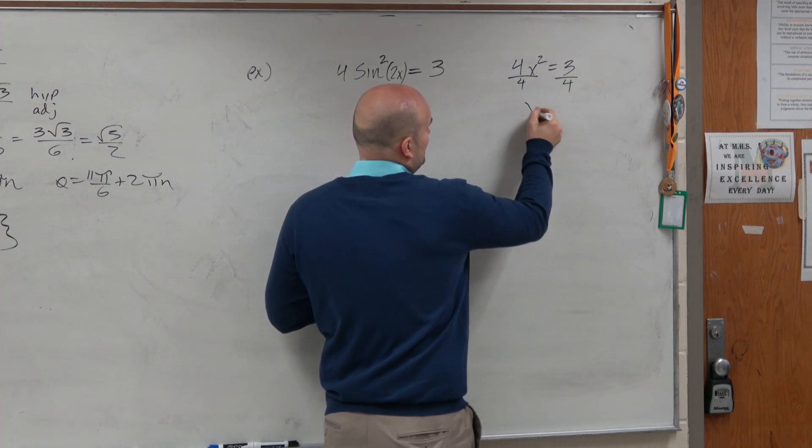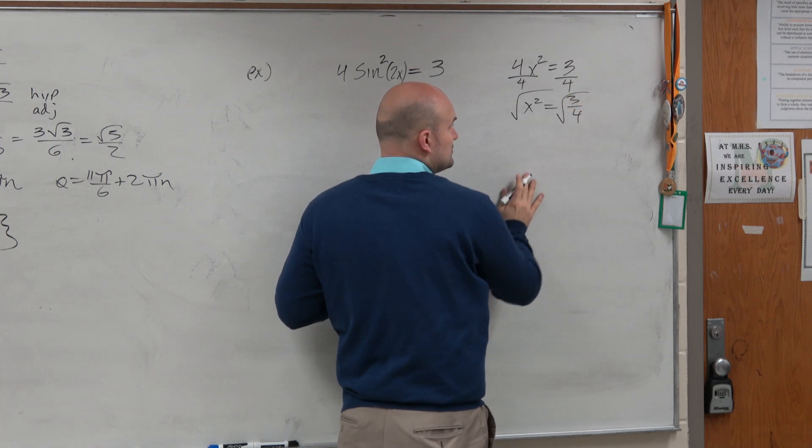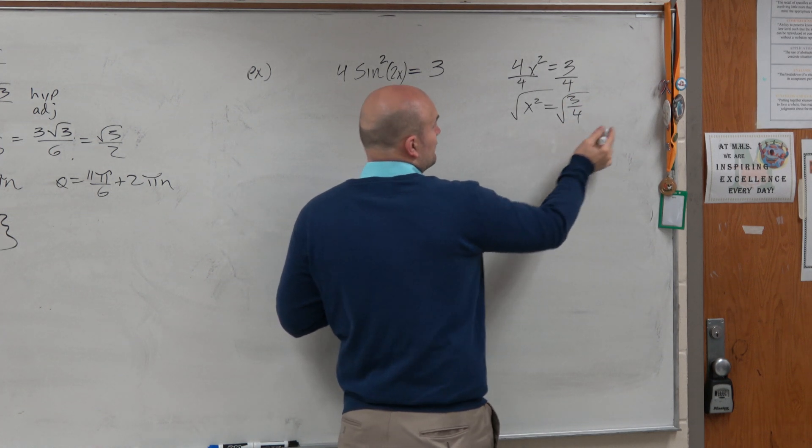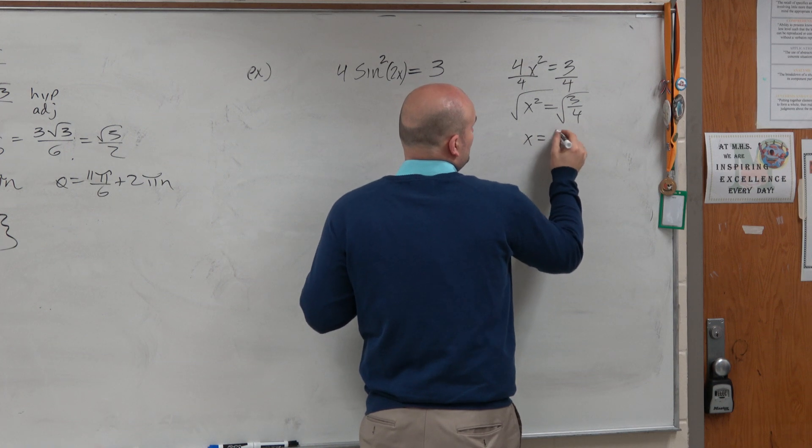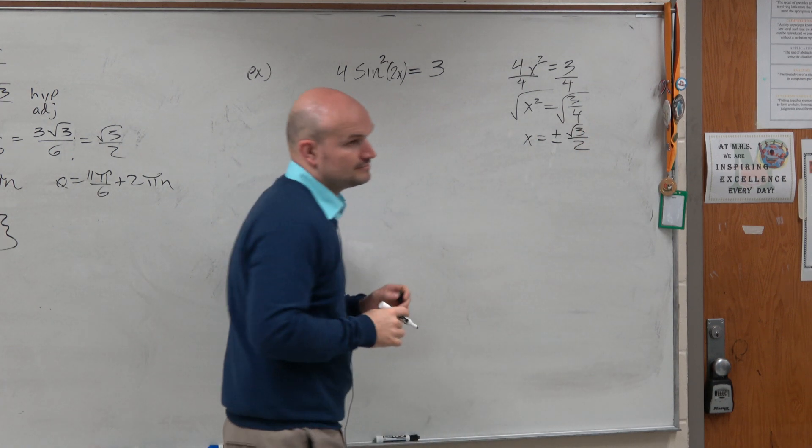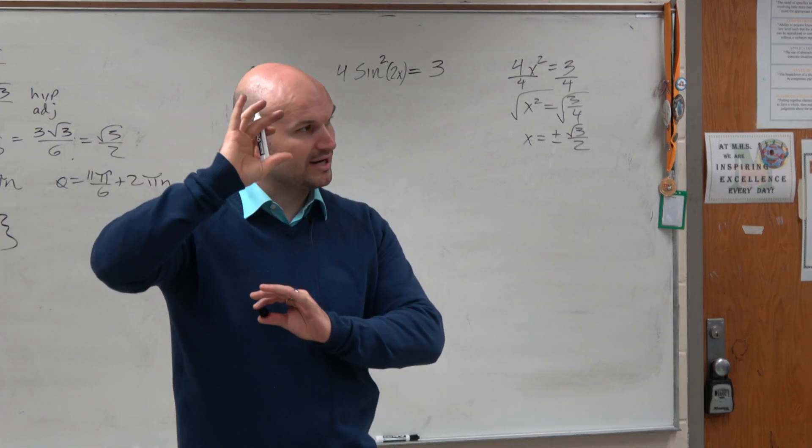Now, and then we take x squared equals 3 fourths. Take the square root. Remember, using the property of radicals, we can break that up into plus or minus the square root of 3 over 2, right? You could take the square root of the numerator and denominator. You can break it up.